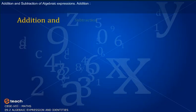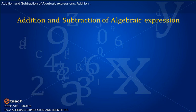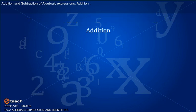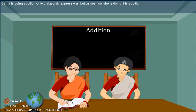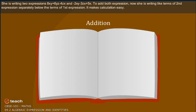Addition and subtraction of algebraic expressions. First, addition. Sarita is doing addition of two algebraic expressions. Let us see how she is doing this. She is writing two expressions: 8xy plus 6yz minus 4zx, and minus 2xy minus 3zx plus 5x.